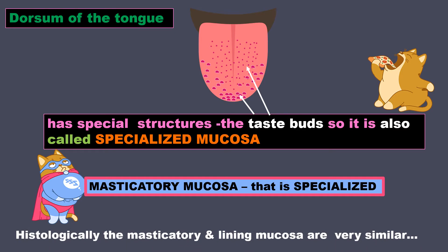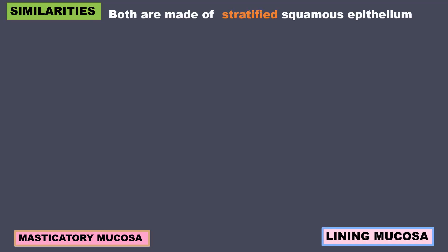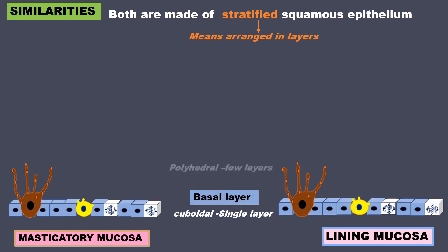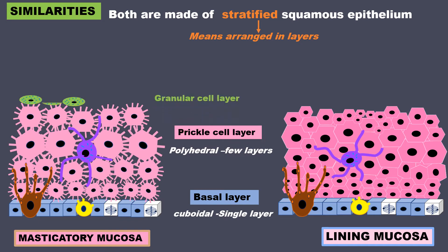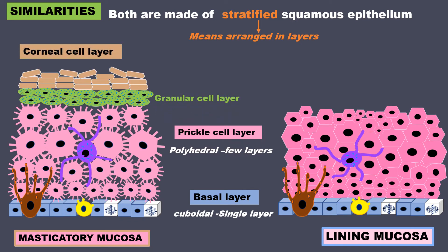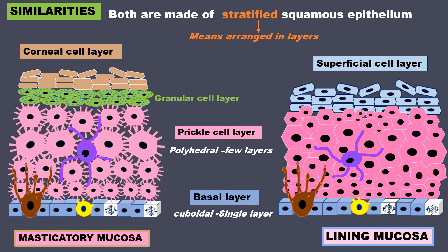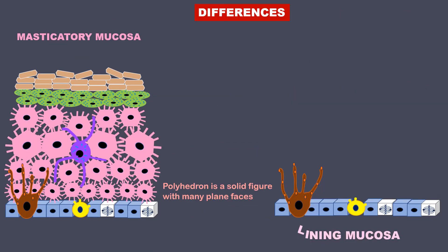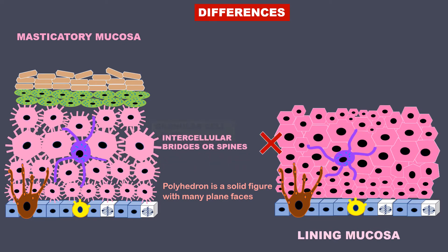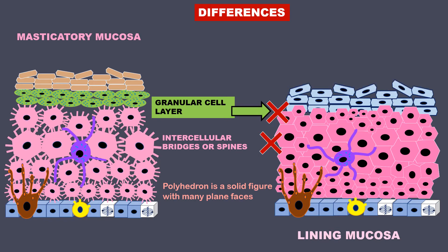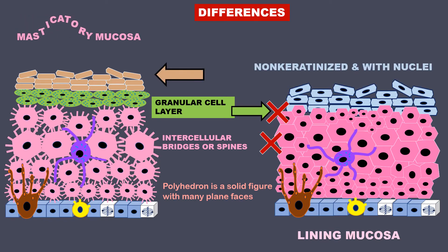Histologically, the masticatory and lining mucosa are very similar — both are made of stratified squamous epithelium. Stratified means arranged in layers. At the bottom is a single layer of cuboidal cells forming the basal layer; above this are a few layers of polyhedral cells called the prickle layer, then 2–3 layers of granular cells, and corneal cells on the surface. However, in the lining mucosa, the polyhedral cells are tightly packed and show no intercellular bridges, the granular cell layer is absent, and the surface layer cells are non-keratinized and contain nuclei. In contrast, the surface layer of masticatory mucosa shows keratinization and does not contain nuclei.